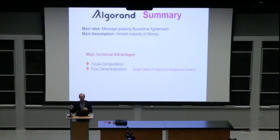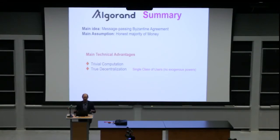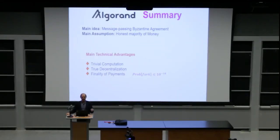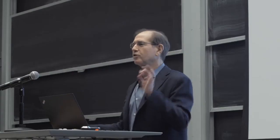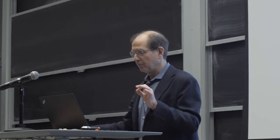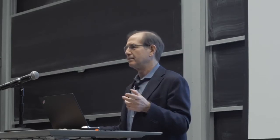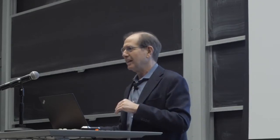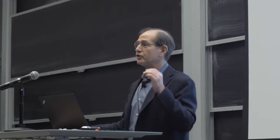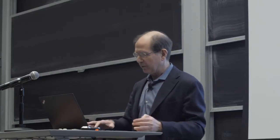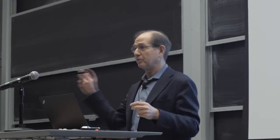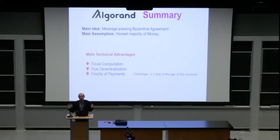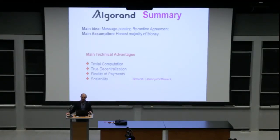Algorand is truly decentralized — I'll explain more as we go. There is a single class of users: not users and miners, just us, together in the same boat. No exogenous parties. Finally, finality of payments — because in Algorand there are no forks. To qualify: forks are highly improbable. The probability that a fork arises is 10^{-18}. That number happens to be the approximate number of seconds from the Big Bang until now. In other words, if we produce a block every second, we'd have to wait for the age of the universe to see a fork.